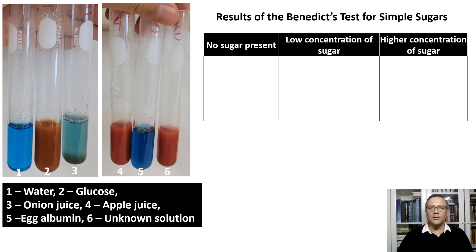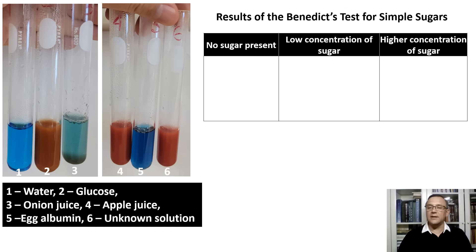It is now time to examine the contents of our test tubes for the presence of reducing sugars. We want to ensure that we are examining the colors using a white background — look at the contents against a white piece of paper, as any other colored background could be misleading. Record your data in the data table and identify the unknown solution. Pause the video and take a close look at the screen to complete this step.